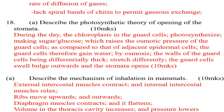During the day, the chloroplasts in the guard cells photosynthesize, making sugar or glucose, which raises the osmotic pressure of the guard cell compared to that of adjacent epidermal cells. The guard cell therefore gains water by osmosis. The walls of the guard cell, being differentially thickened, stretch differently.